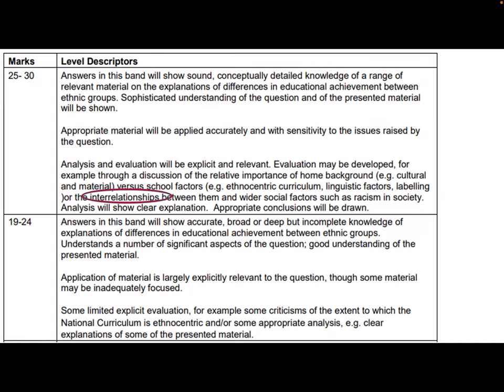We're aiming for a top-band essay. The band below — 19 to 24 marks — doesn't explicitly mention interrelationships, but from my experience marking the paper, it is very hard to get into the 19 to 24 band unless you have identified the connections between what happens outside of school and in school. You're welcome to pause the lecture to read through the level descriptors in more depth.